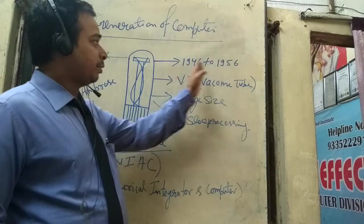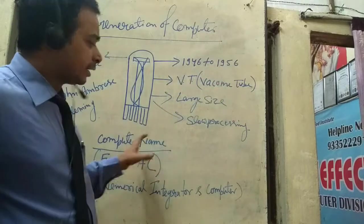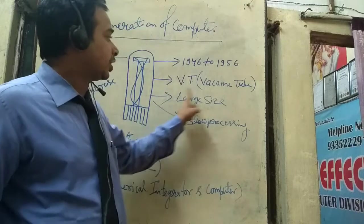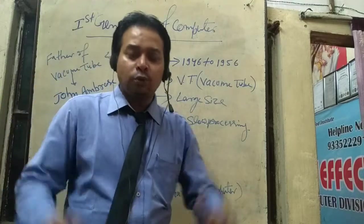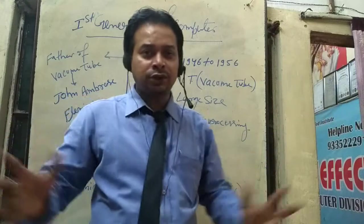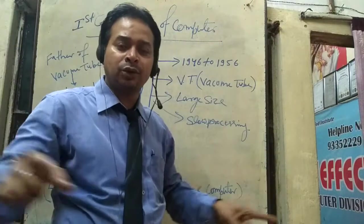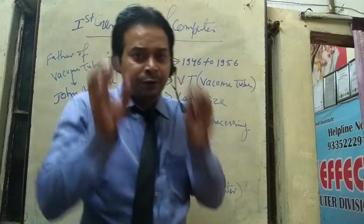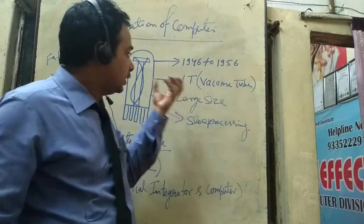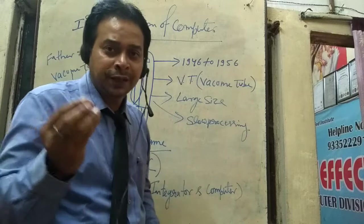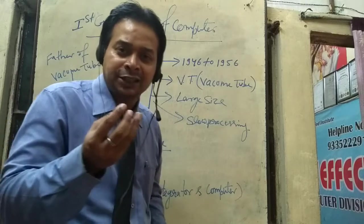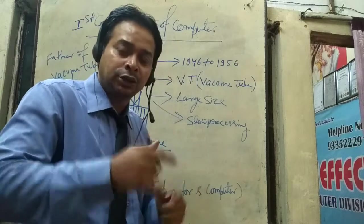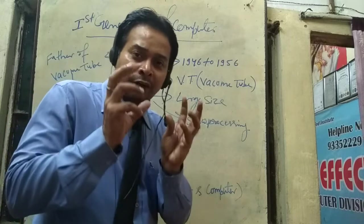This is a computer development device, which is called a vacuum tube. In that time, computers were very large — the size of a room — and you could go inside and work on the computer. In that computer, there was a light component called a vacuum tube, referred to as IC in every part.